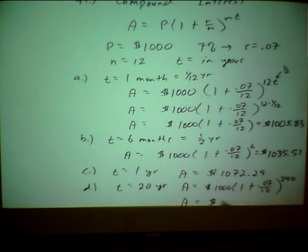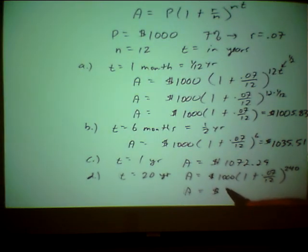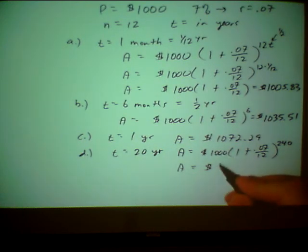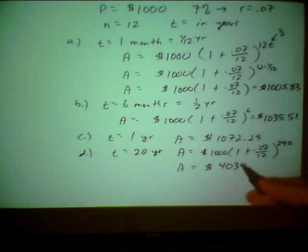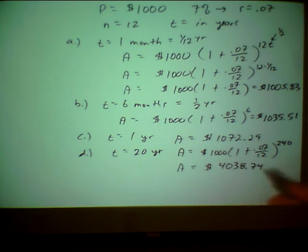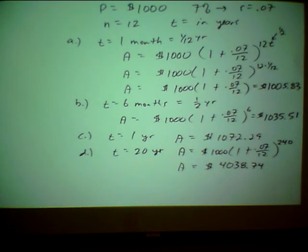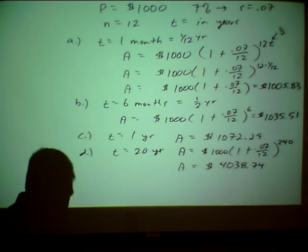Now you can see you've actually really made some money by leaving it in the bank for a while. $4,038.74. So that's how compound interest works. If you leave it long enough, it can really grow. All right. So hopefully you will not find it too difficult to do those kinds of problems.